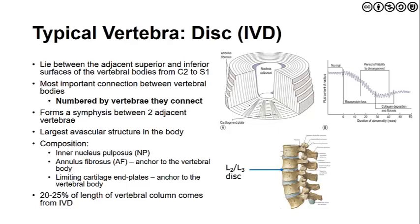Cartilaginous end plates anchor to the vertebral body itself. As a whole, discs contribute about 20 to 25 percent of the length of the vertebral column. With age, there is a loss of the fluid content of the nucleus pulposus, which is one of the major reasons we begin to see degenerative disc disease.